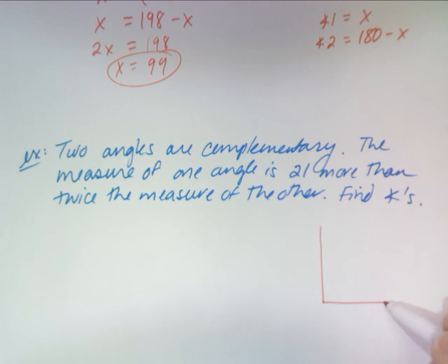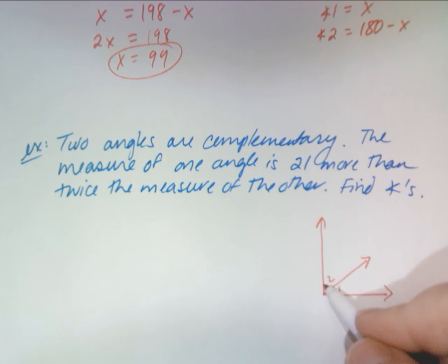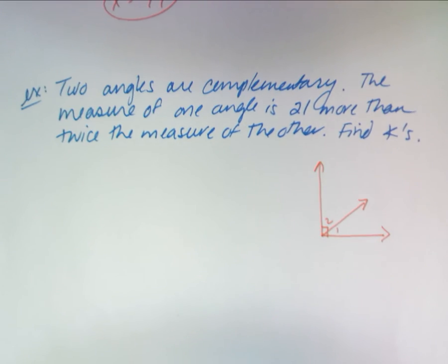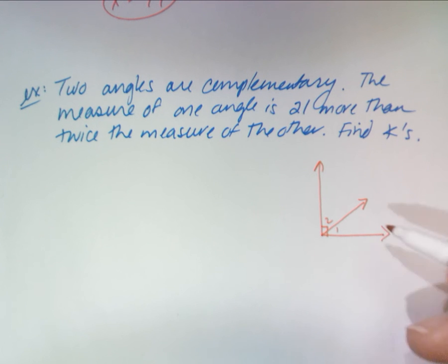So to be complementary, you make 90 degrees. Here's angle one. Here's angle two. They're making 90. So again, do exactly what I just did up there. Let's call angle one X. Let's call angle two its complement, 90 minus X.